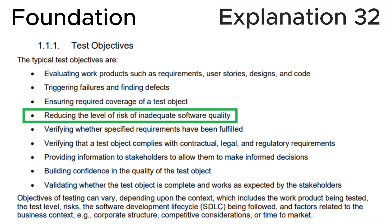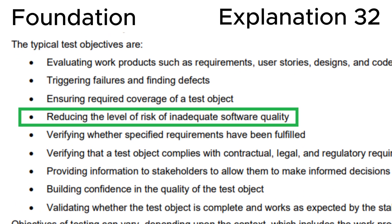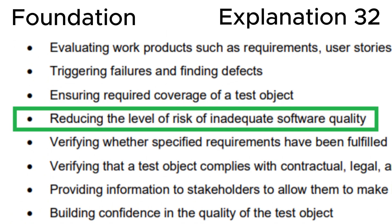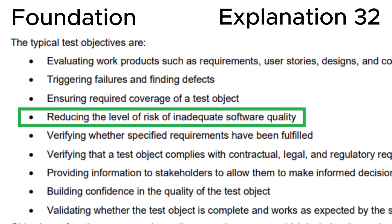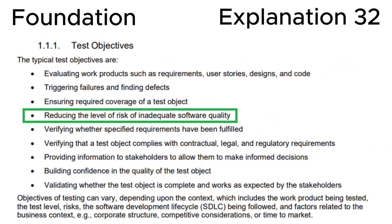Moreover, let's look at section 1.1.1.1 — Test Objectives — in the ISTQB syllabus, where we can see that the key point is reducing the level of risk of inadequate software quality. This is fully consistent with the correct answer C. I'll repeat: don't confuse test objectives, testing principles, and regression testing.